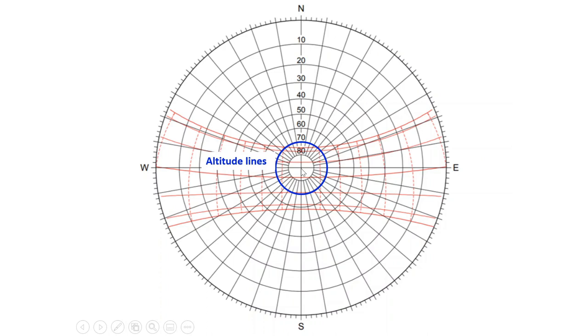And then comes azimuth lines. These are the radial lines starting from the center of the circle. When it is north point, azimuth angle is 0. When it is east, it goes to 90 degree. When it is south, it goes to 180 degree, and so on.